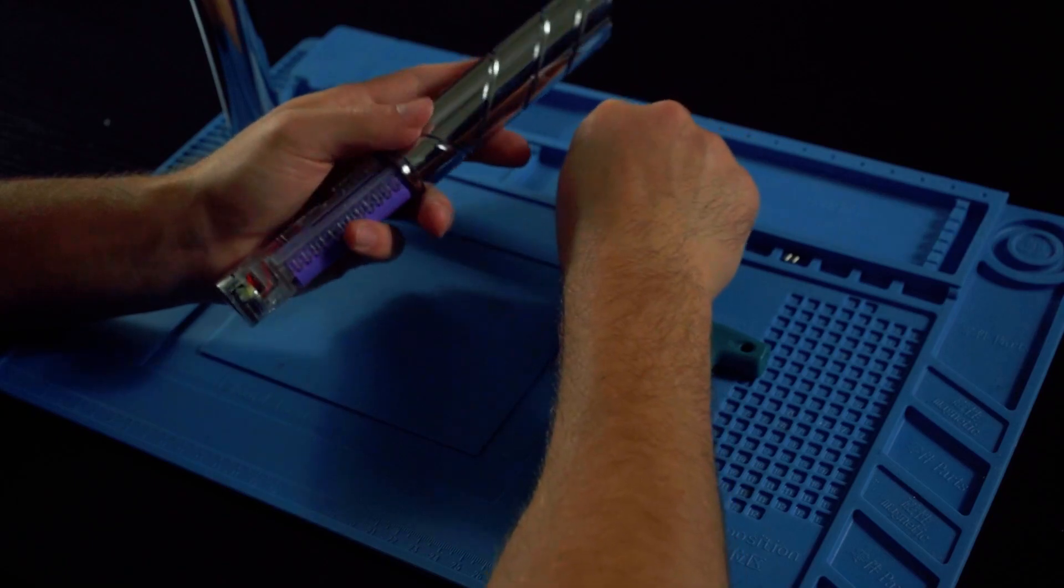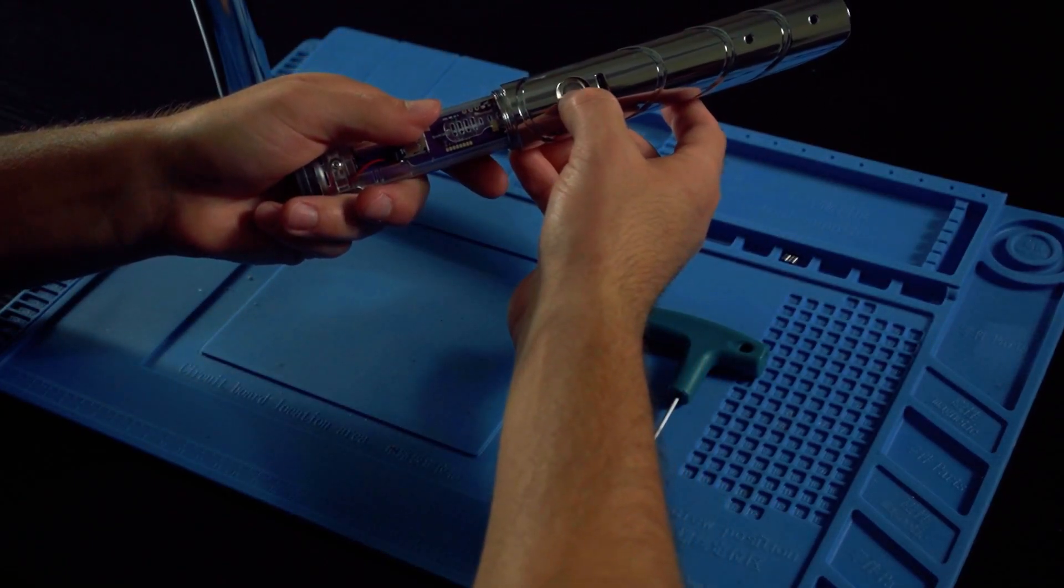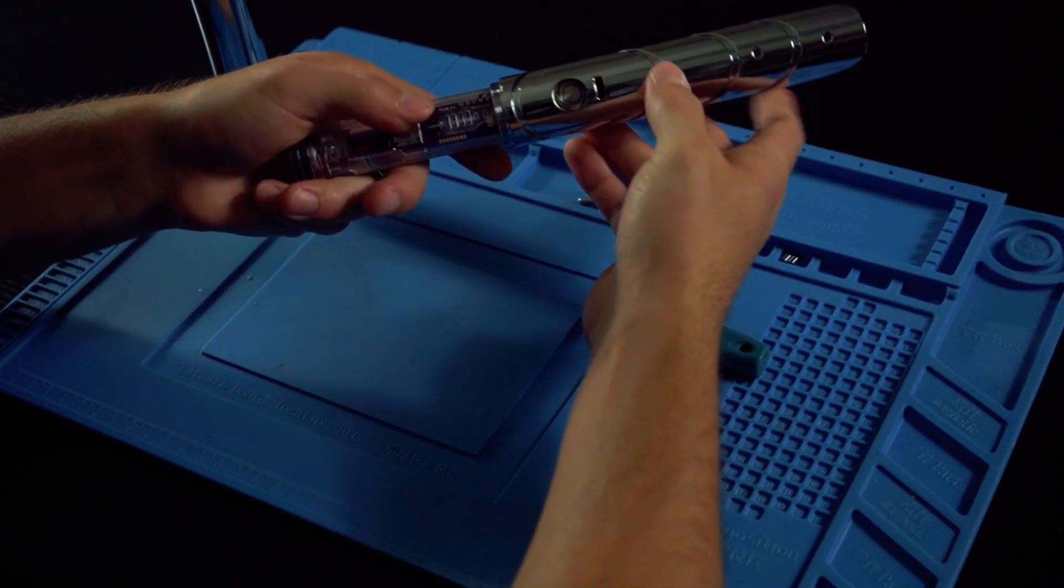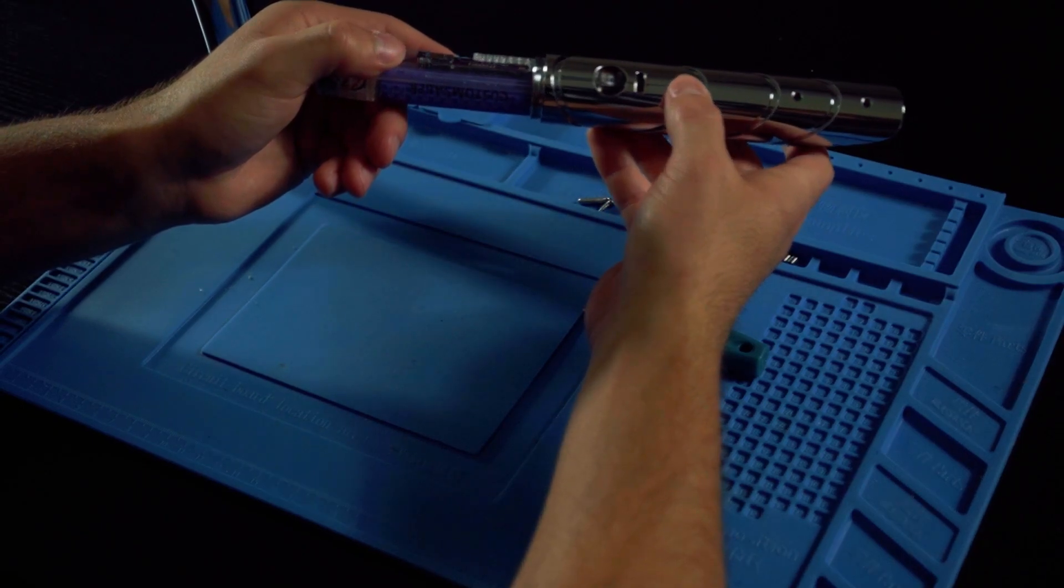Now that we got both of the screws out, we're going to go ahead and push in on the power button. Make sure you push it in all the way, and then go ahead and slide the top of the hilt off.